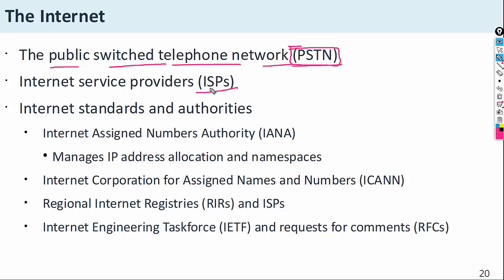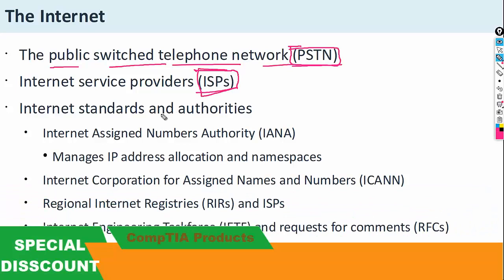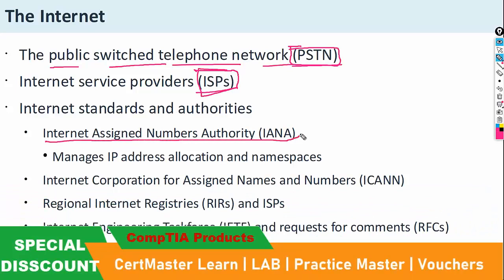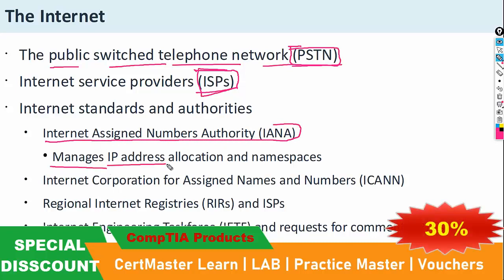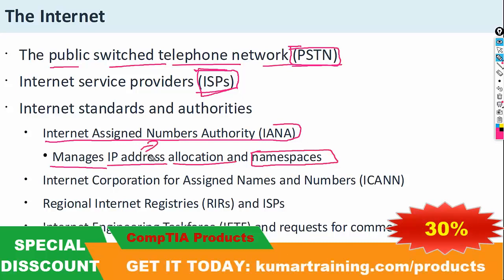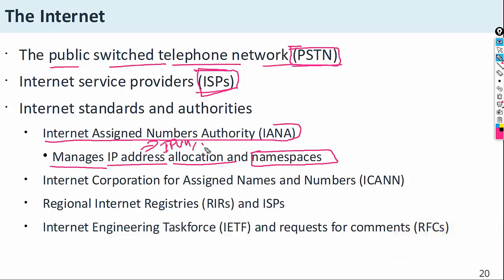The internet is not a single entity — multiple organizations are working within it. One is the Internet Assigned Numbers Authority (IANA). They are managing and providing IP addresses, allocation, and top-level domain name spaces. They provide IP addresses which may be IPv4 or IPv6. You can search IANA on Google to get more information. This is managed by the Internet Corporation for Assigned Names and Numbers, ICANN.